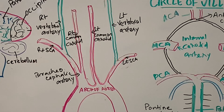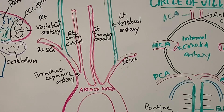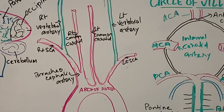The three major blood vessels arising from the arch of aorta are the brachiocephalic artery, the left common carotid artery, and the left subclavian artery. The brachiocephalic artery divides into the right subclavian and right common carotid artery. The right vertebral artery arises from the right subclavian artery, and the left vertebral artery arises from the left subclavian artery.